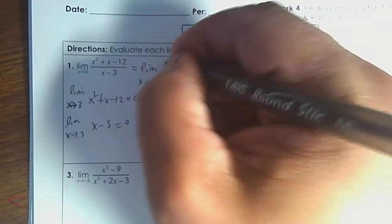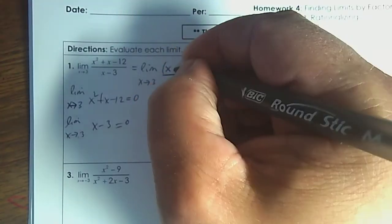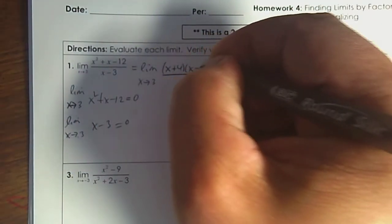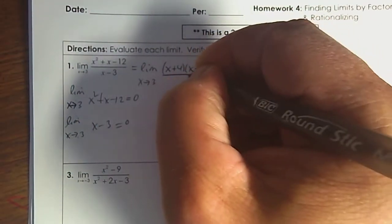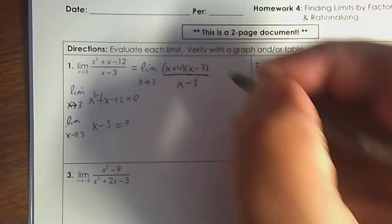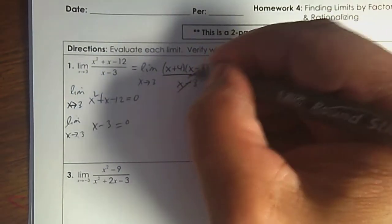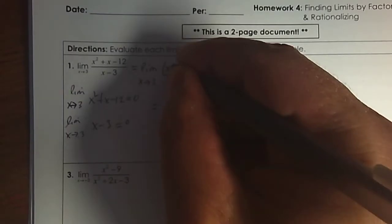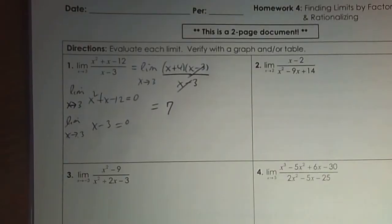So the numerator, to factor it, would be positive 4 and negative 3. And then the denominator. Notice the hole that will divide out. Then what's left over, you substitute in and you get your answer.